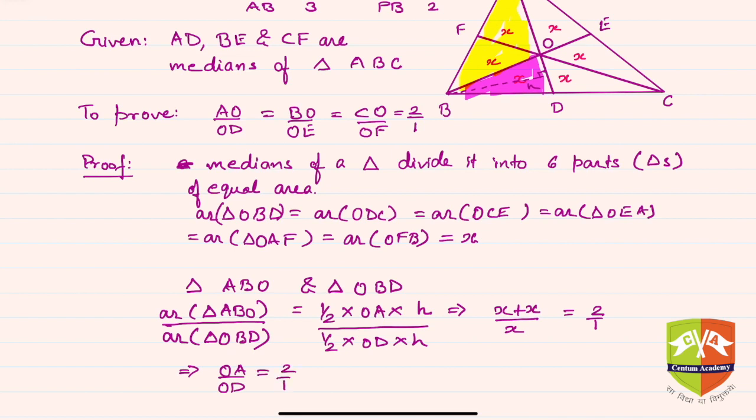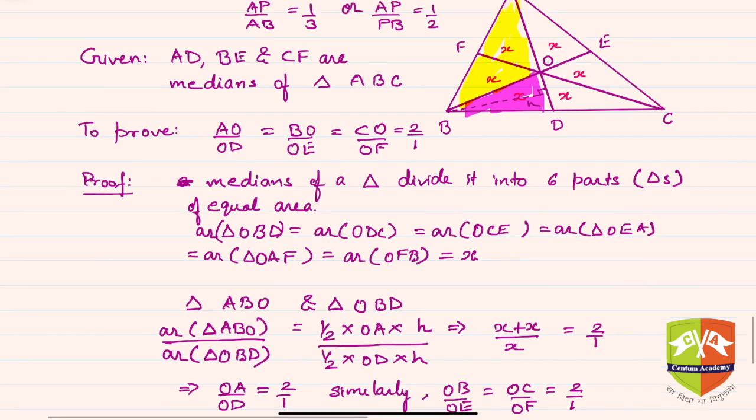Similarly you can repeat the process for the other two pairs of triangles and hence you can say: similarly OB/OE is equal to OC/OF and all are equal to 2/1. Hence we could establish the given theorem.